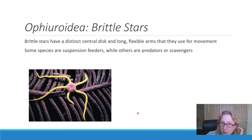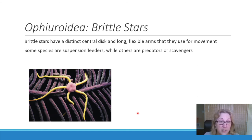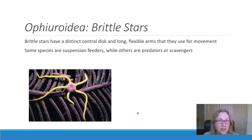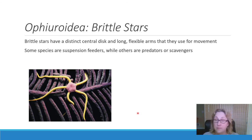The Ophiuroidea, the brittle stars, are called brittle stars because their arms break off really easily. This has evolved by natural selection as an escape strategy. They are predators and scavengers of dead things, and if something grabs one of their arms, it will break off quite easily, allowing the brittle star to get away.